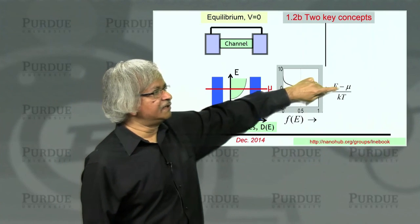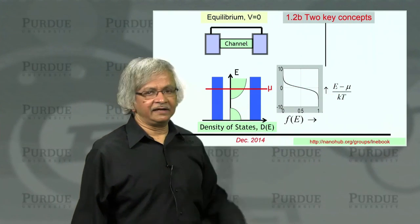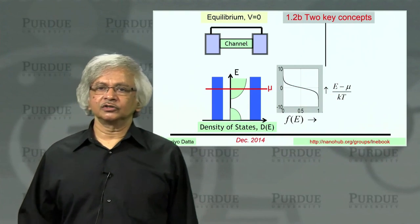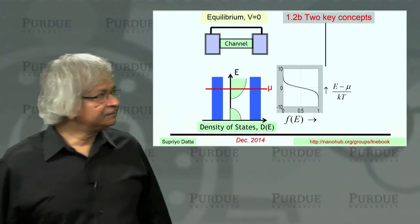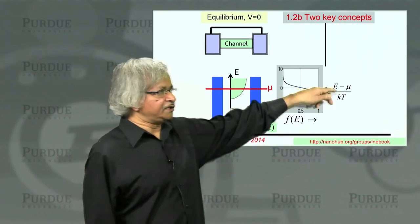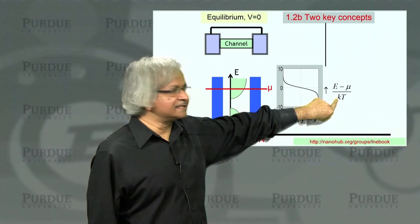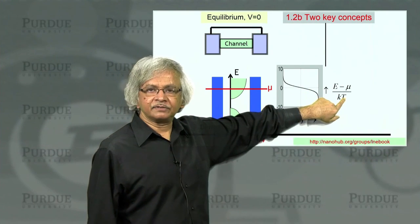And it's divided by this quantity KT. That's something that also appears all the time in our discussion. So this is called the thermal energy. This K is called the Boltzmann constant. And T is the absolute temperature.